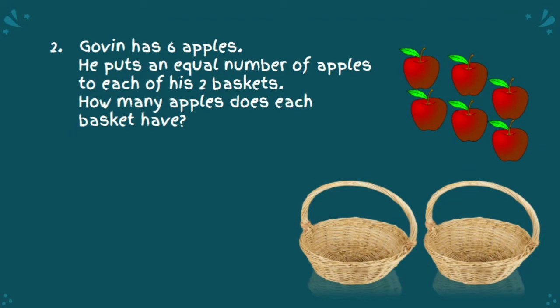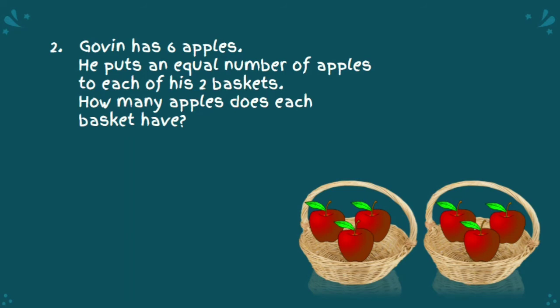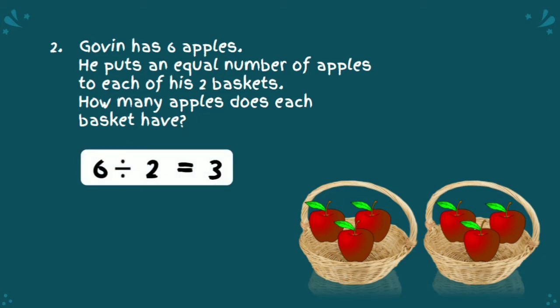Now, let's check whether our answer is correct or not. Put 3 apples in each basket. Now, each basket has equal number of apples. It means our division sentence is correct. 6 divided by 2 is equal to 3. And the conclusion is there are 3 apples in each group or in each basket.